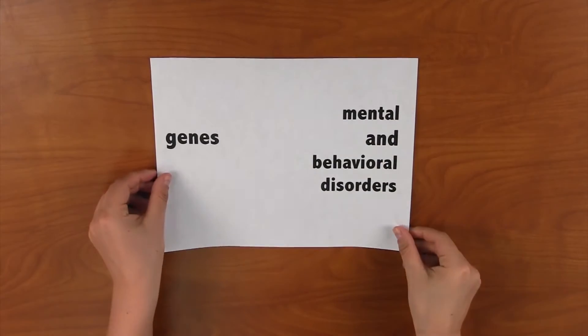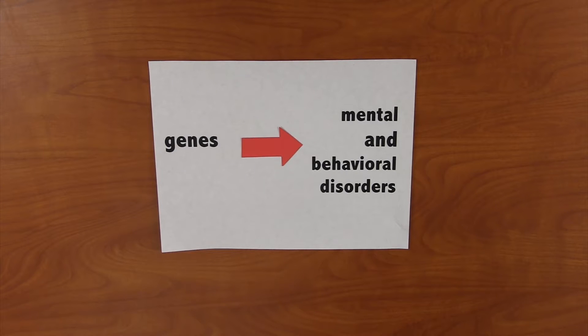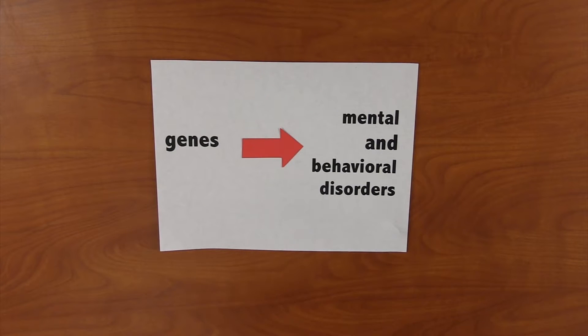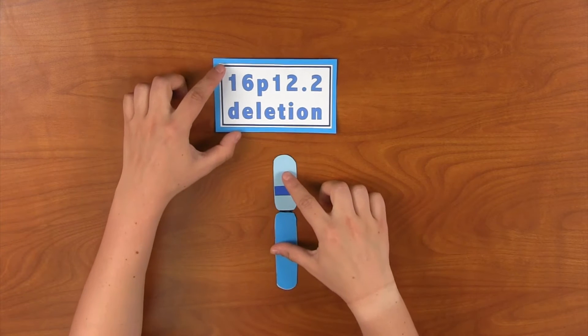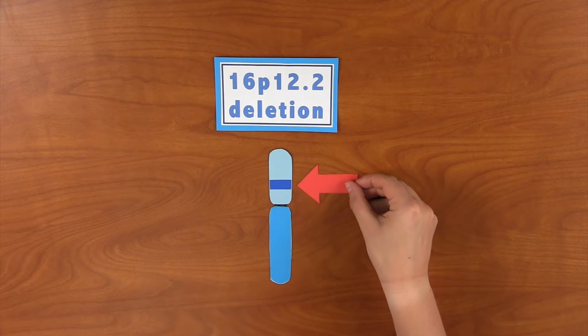Basically, we want to understand how genes affect mental and behavioral disorders. Let's begin by talking about the specific project, how and why we're doing this research on the 16P12.2 chromosomal deletion. The 16P12.2 deletion is a deletion of DNA on the short arm of the 16th chromosome at a specific position that results in the absence of multiple genes.